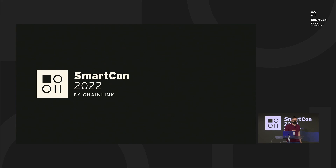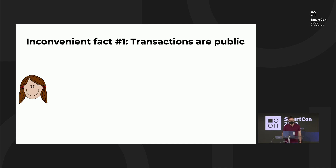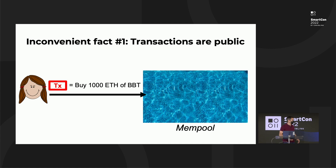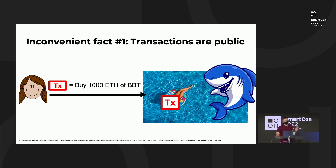To begin with, let me explain the problem of transaction ordering. It's helpful to recognize two inconvenient facts about the way that blockchain systems are designed today. The first inconvenient fact is that transactions are public. As many of you know, if a user sends a transaction — our user Alice here, for instance, wants to buy some Bob's Bubble token, 1,000 ETH worth of BBT — she sends a transaction to a smart contract. It has to go through a mempool, and while it's sitting in the mempool, it's visible to everyone, including potentially malicious actors.